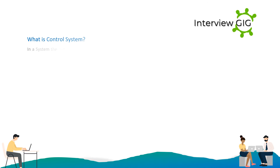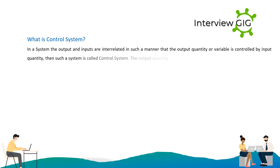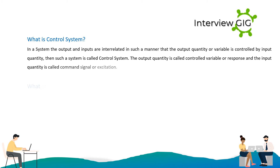In a system, the output and inputs are interrelated in such a manner that the output quantity or variable is controlled by the input quantity — such a system is called a control system. The output quantity is called the controlled variable or response, and the input quantity is called the command signal or excitation.